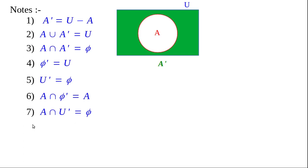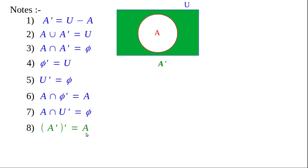Note number 8: A dash whole dash — the complement of the complement of a set. A is the circle, A dash is the green shaded region. The complement of the green shaded region is A itself. It means A dash whole dash equals A. The complement of the complement of a set is the set itself. This law is called the Law of Double Complementation.